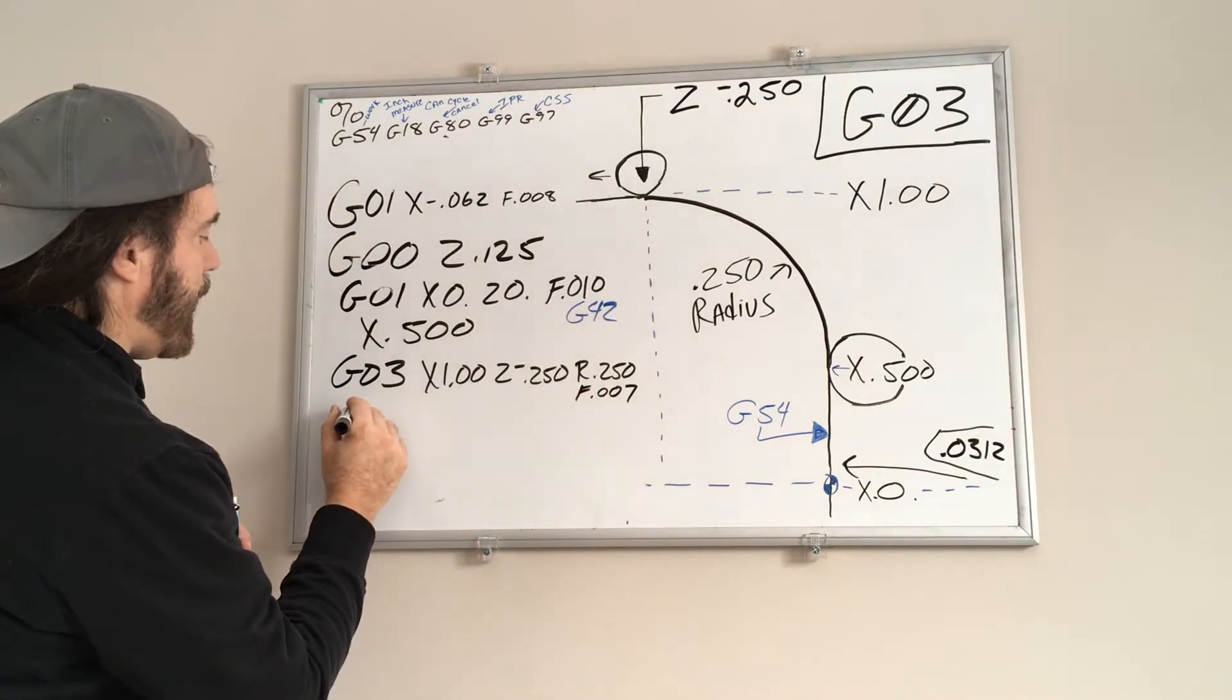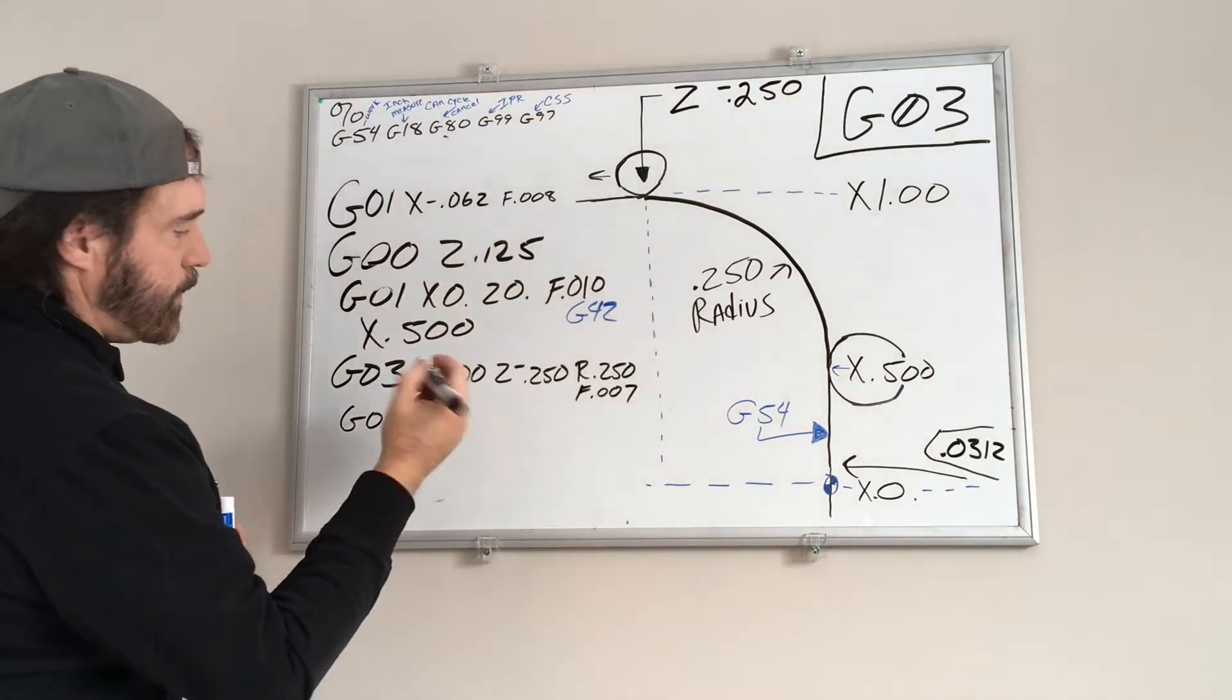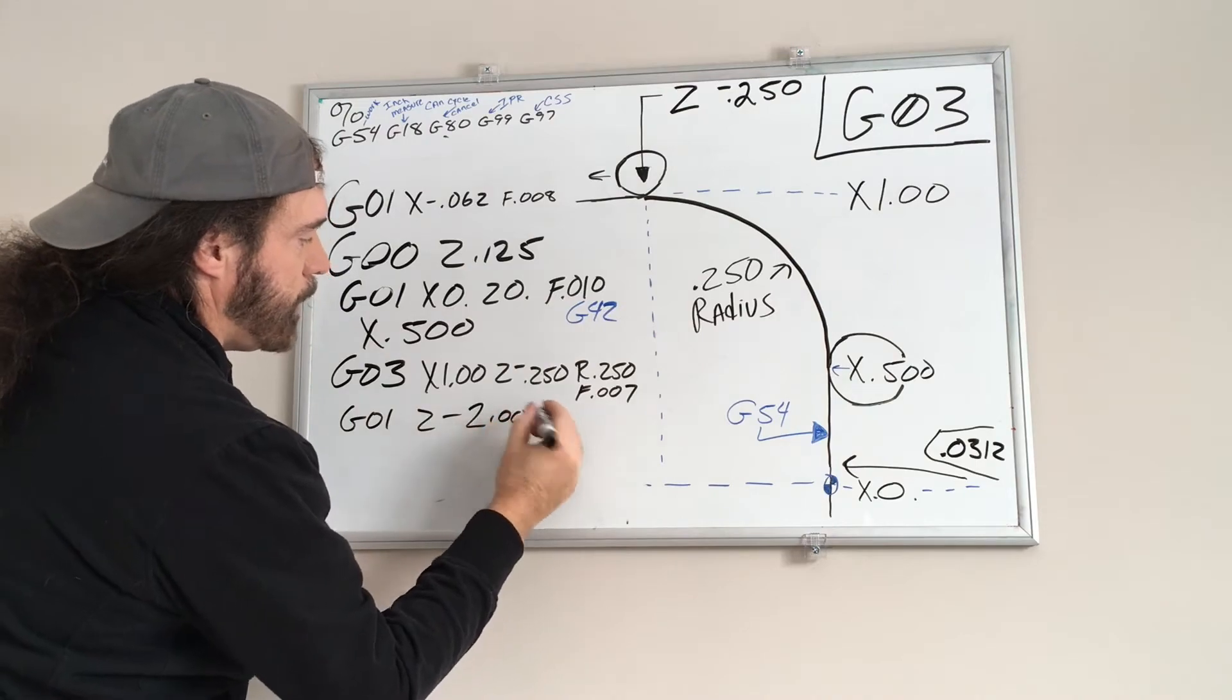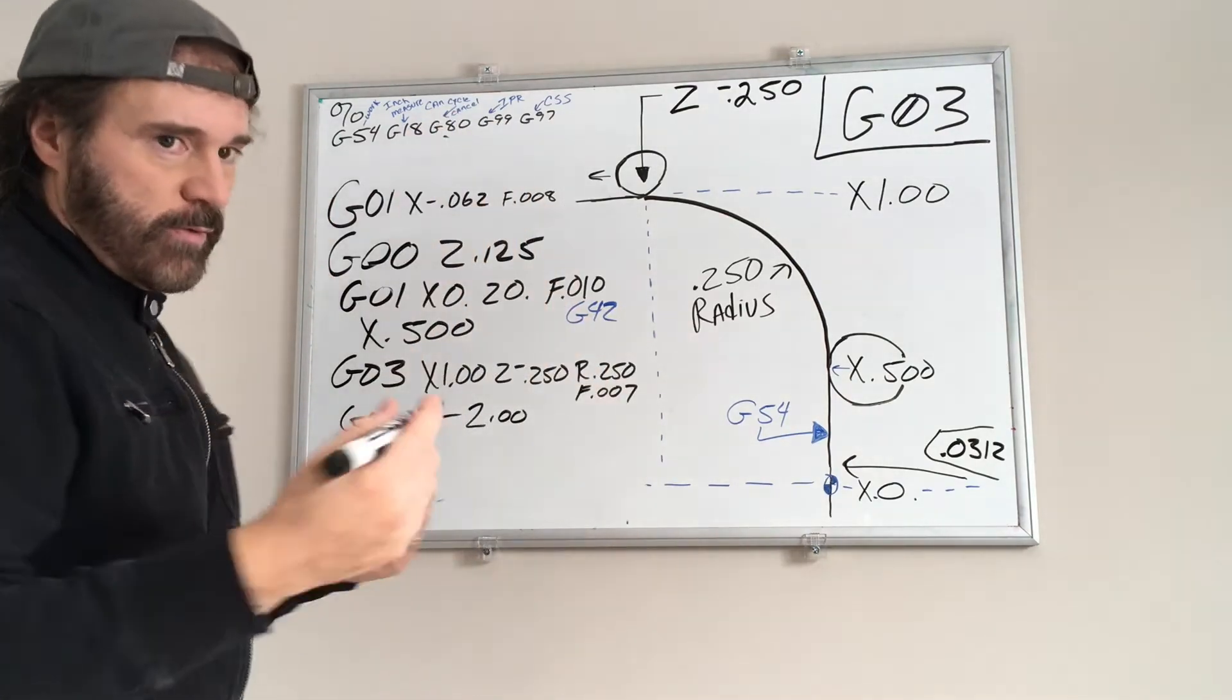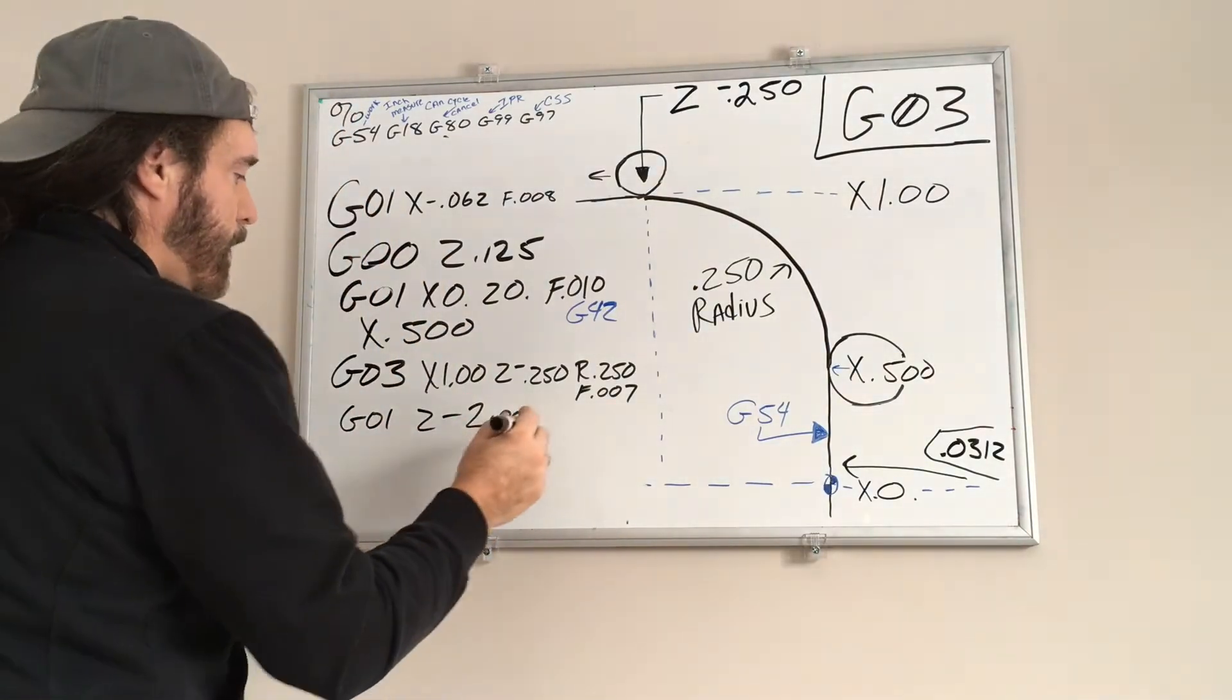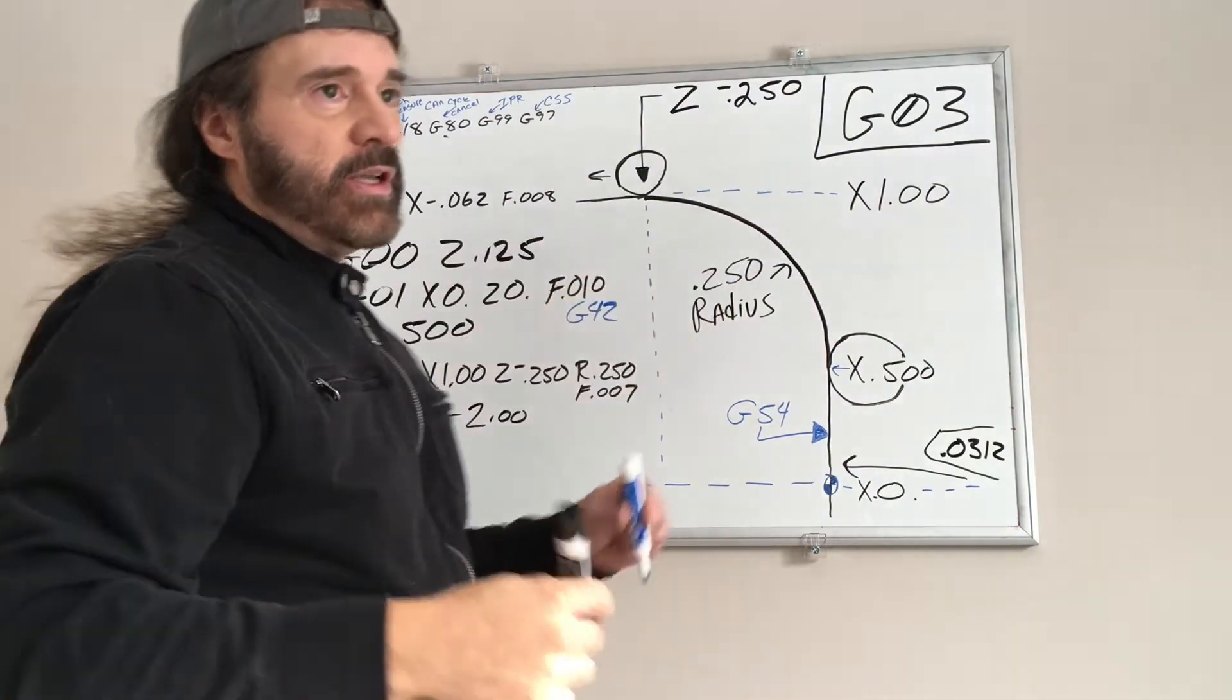And then we have to activate G01 now because we're going to do a straight line move and Z negative, we'll go 2.0. So and then from there on out, it's whatever you want to do. So and then when you're done doing that, you come off the part.